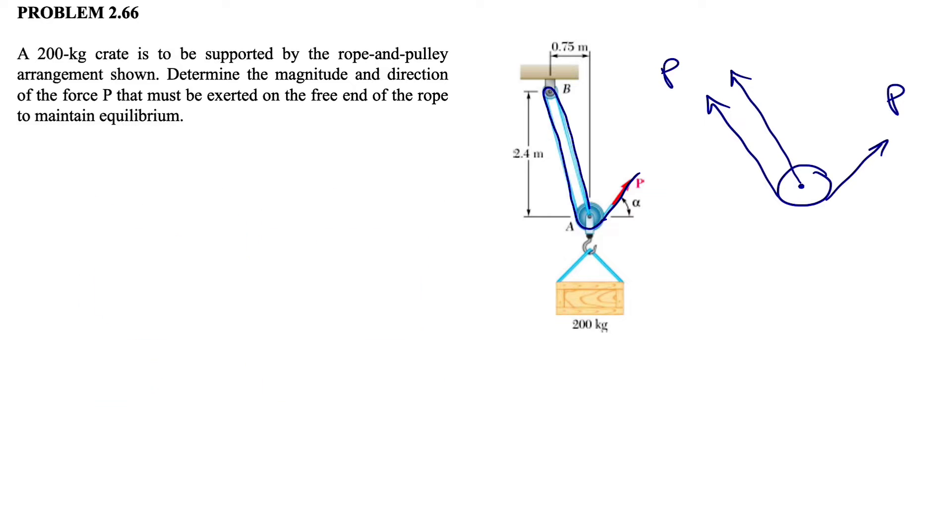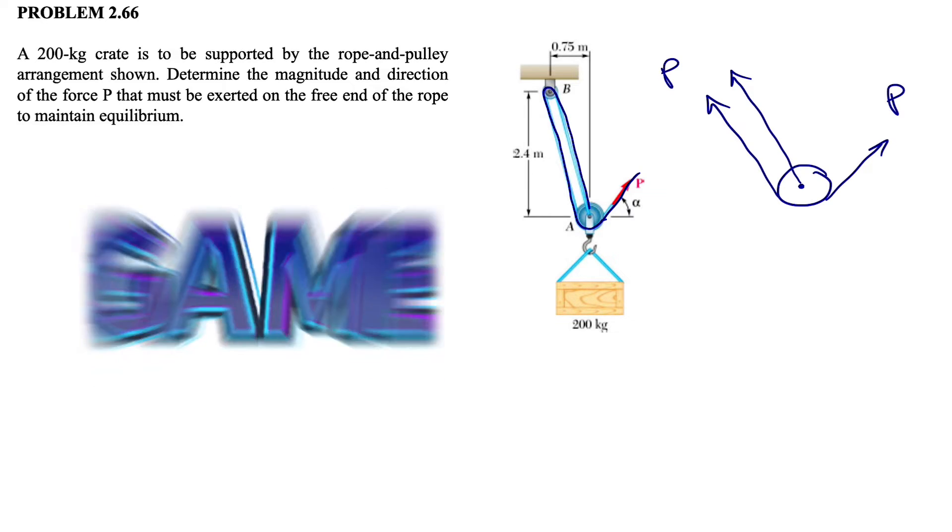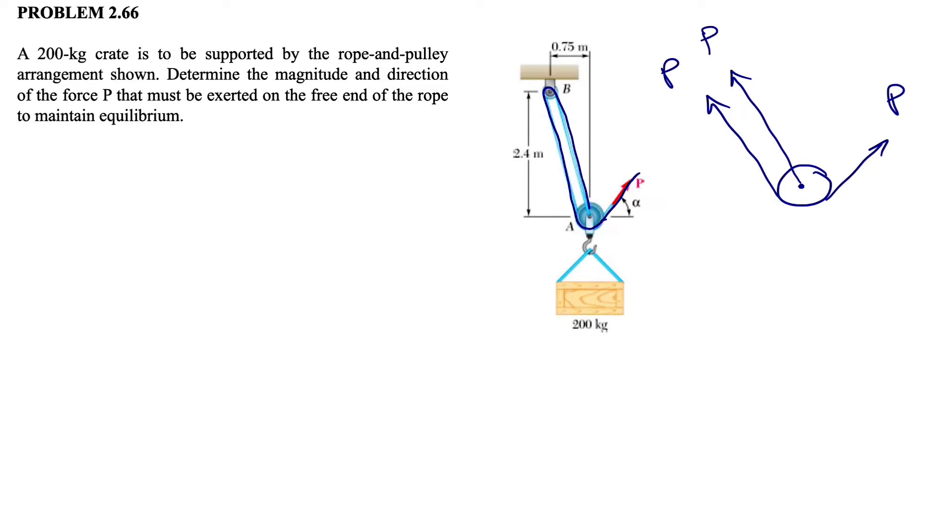I'm going to start with the free body diagram. As I mentioned, we have one rope which we know the tension in the rope is P. We'll have this force P at the left side of pulley A and another force P to the center of pulley A.